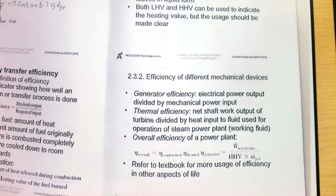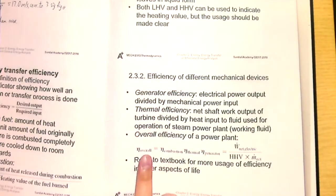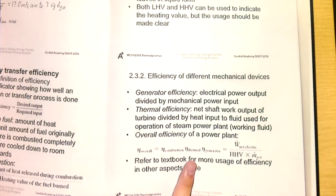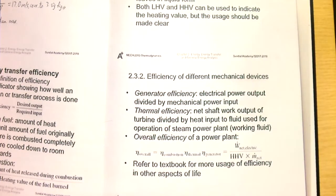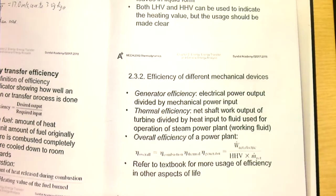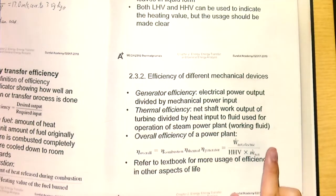We can state the overall efficiency of a steam power plant in terms of other efficiencies. If the overall process can be divided into a sequence of processes, then the overall efficiency is the multiplication of the individual efficiencies. This gives us: combustion efficiency times thermal efficiency times generator efficiency. The thermal efficiency refers to when steam flows through the turbine and rotates the shaft, and multiplying these three gives the overall efficiency.